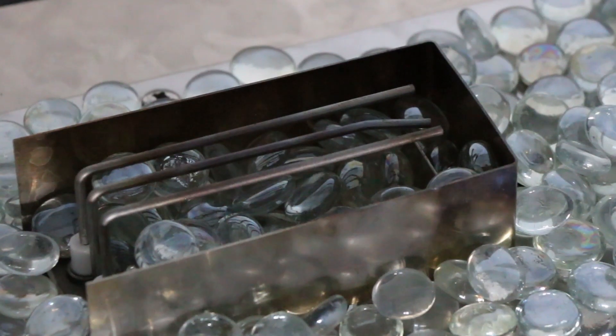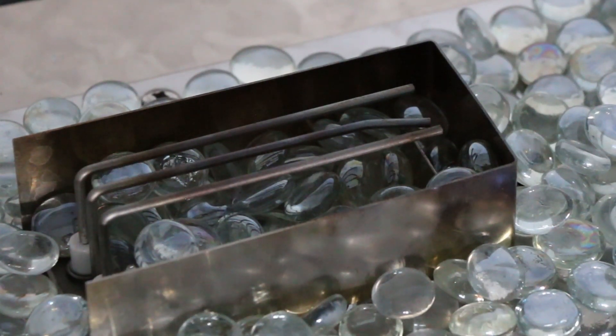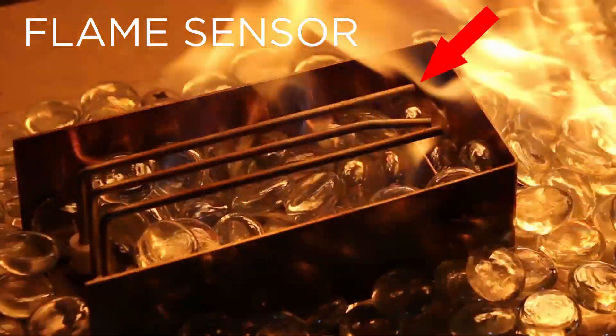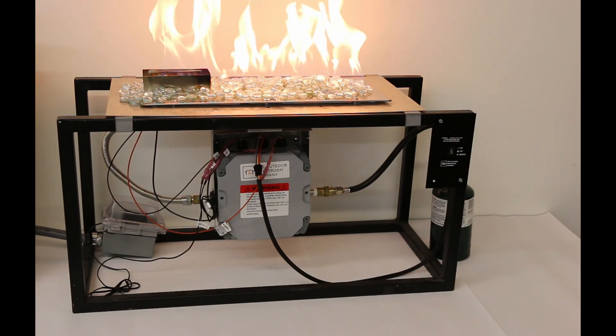Within a couple seconds, you should hear and see the sparker starting to spark between the igniter and the ground as shown here. The igniter will spark for 12 seconds while it waits for gas to enter the burner and ignite. Once the burner ignites, the flame sensor recognizes the flame is present and sends a signal back to the module and valve that everything is functioning properly. And that's it! You're able to enjoy your fire.